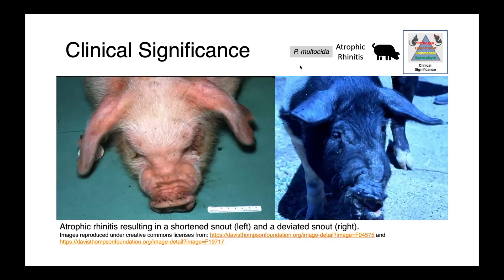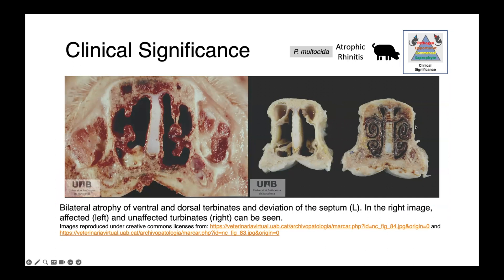In these two images, you can see pigs affected with atrophic rhinitis. On the left, the animal's snout has shrunk and the skin above the nose is wrinkled and pushed up. On the right, the pig has a laterally deviated snout shifted over to the right. In the cross-section image, the right-hand side is considered normal — you can see the scrolling of the nasal turbinates unaffected. On the left side of the same image, the scrolling structure is largely obliterated. In the left-hand image, there is bilateral atrophy of both the ventral and dorsal turbinates, and the septum is also deviated.